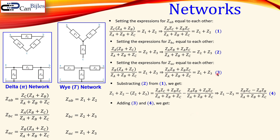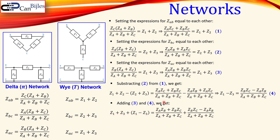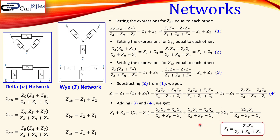We then add equation 3 and equation 4. Z3 and minus Z3 cancel, giving 2 times Z1 on one side. The ZA and ZB product terms also combine, resulting in 2 times ZB times ZC divided by the sum of ZA, ZB, and ZC equal to 2 times Z1. Dividing both sides by 2 gives the first delta-to-Y conversion formula: Z1 equals ZB times ZC divided by the sum of all three delta impedances.